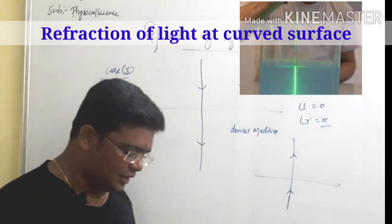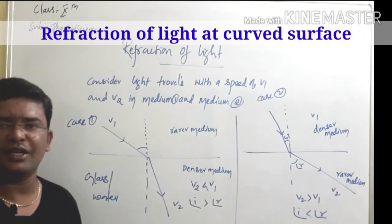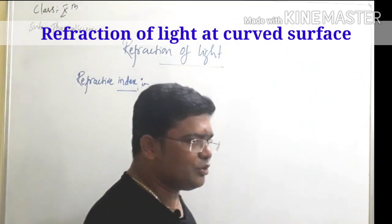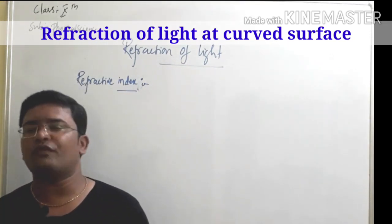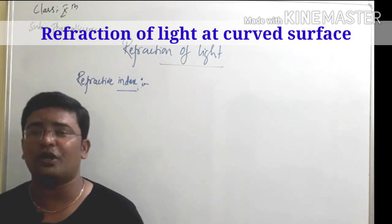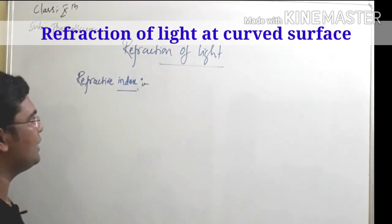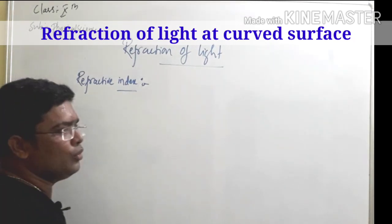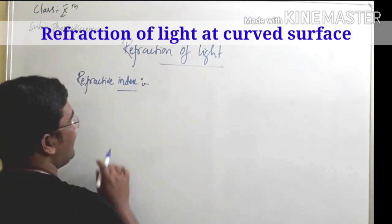So these are the three cases when a light ray enters from one medium to another. Now let us move to the next concept: refractive index. In order to understand why the speed of light decreases when it enters from one medium to another, let us understand the refractive index.